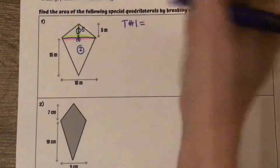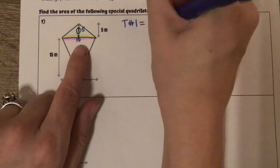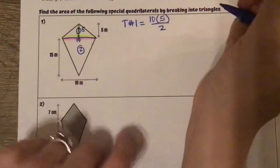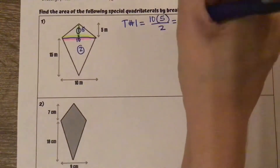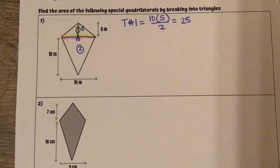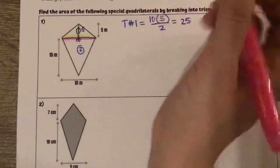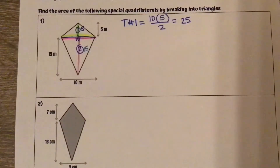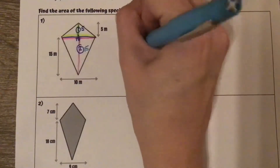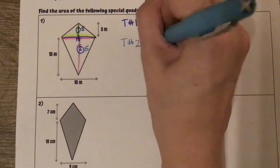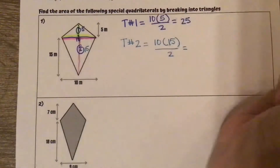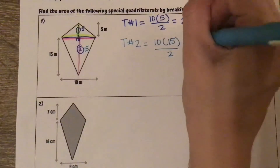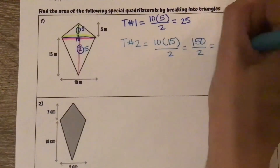For triangle number 1, we're doing our base of 10 times our height of 5 divided by 2, which gives me 25. Now let's do the same thing for triangle number 2. It has the same base across of 10 and then a perpendicular height of 15. Plugging in triangle number 2, our base of 10 times our height of 15 divided by 2 — 150 divided by 2 is 75.